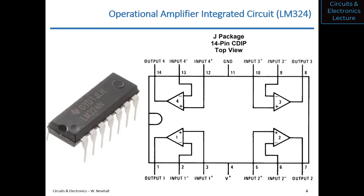Op amps can be used in a way where the exact value of A_OL doesn't matter — only that it's big (in the 10,000–100,000 range). You'll build circuits where the circuit's gain, say ×10, depends on external resistor values, not on A_OL itself. That way, if A_OL varies between 75,000 and 125,000, you wouldn't notice. The circuit gain is independent of the particular A_OL value, as long as it's big.